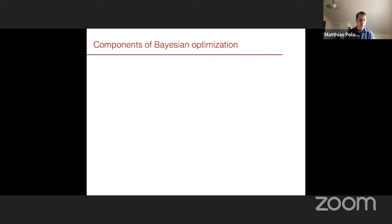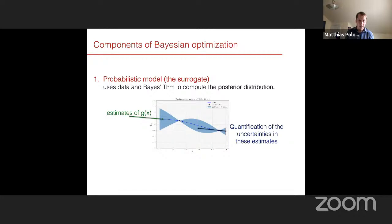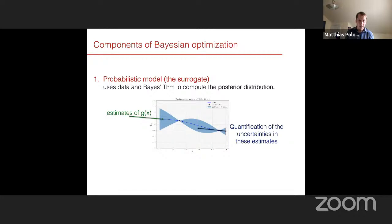Bayesian optimization can solve these problems efficiently. It has two components. The first is a probabilistic model, which uses data and Bayes theorem to compute the posterior distribution. For each x, it gives an estimate of g(x) — shown as a solid line representing the mean performance — and also provides a quantification of uncertainty in these estimates. The uncertainty is small in areas we've already observed, and it grows as we move away from the observed points.